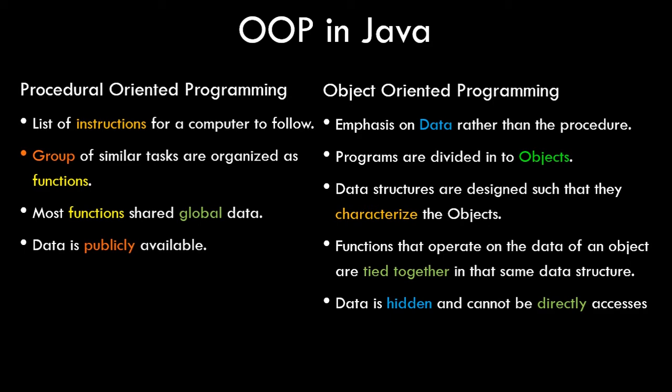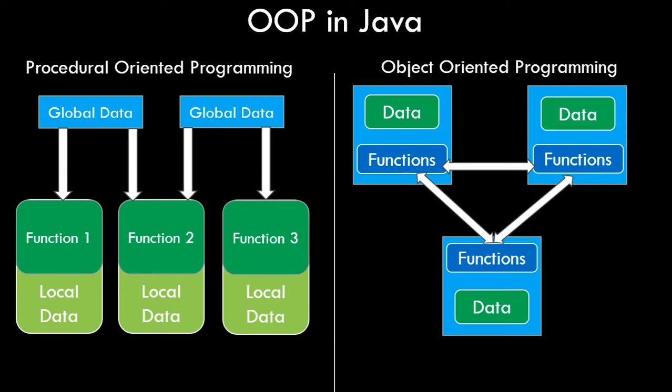The data is not directly accessible outside a class by outside functions, which adds a layer of security in object oriented programming. It is more suitable for real world scenarios and tackling real world problems. In object oriented programming, more focus is given on classes, objects, and data. In procedural oriented programming, focus is on functions and data is globally available. Let's take a visual representation of both approaches.